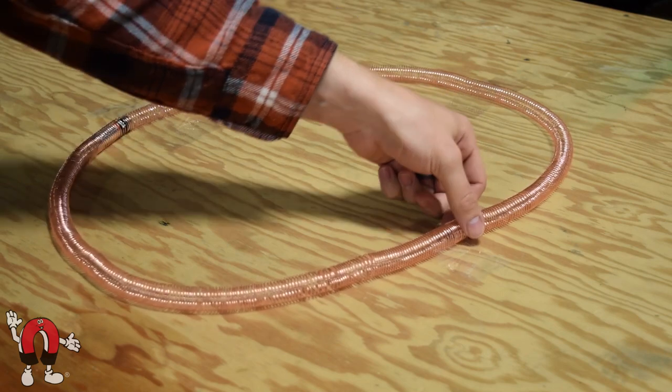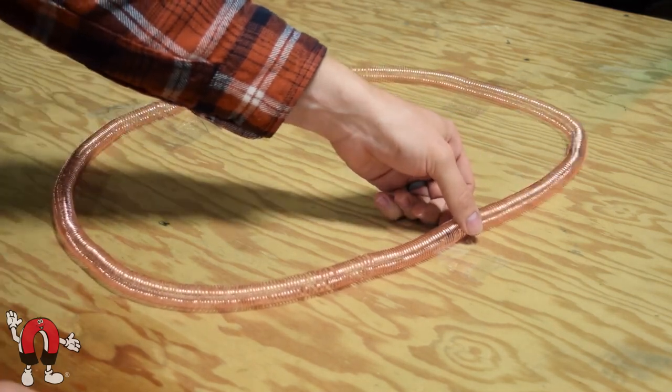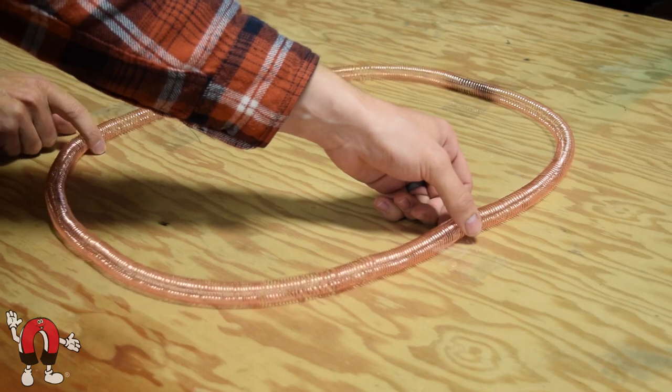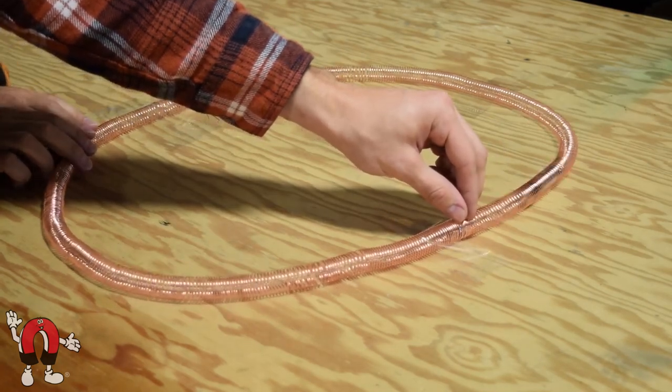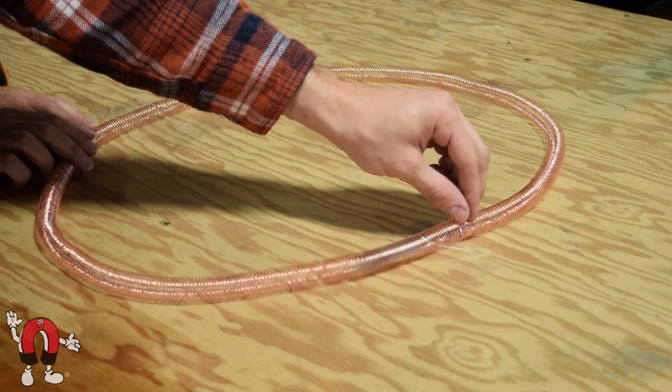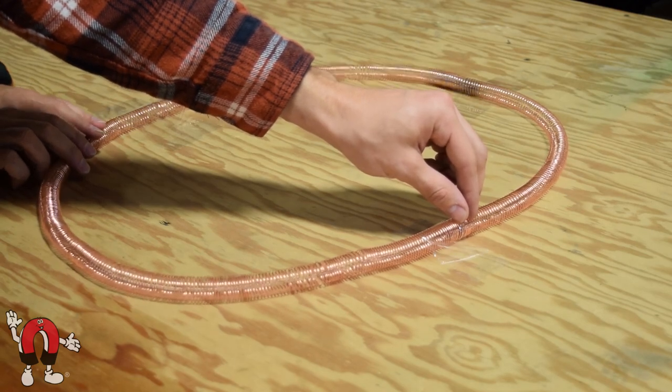So basically we have a double-A battery with a magnet stuck on each end. As it slides through the coil of wire, it makes a current through the wire which propels it forward. Here we have kind of an endless loop going to see how many we can get.